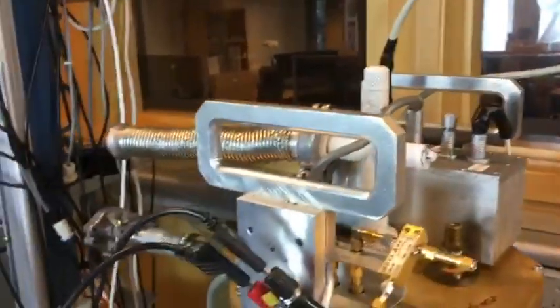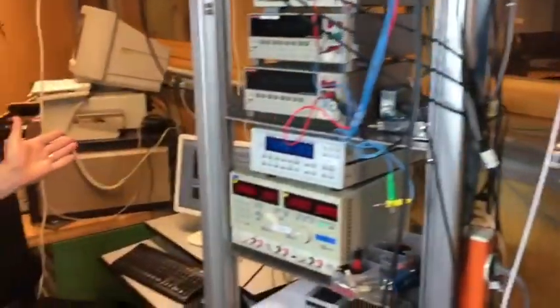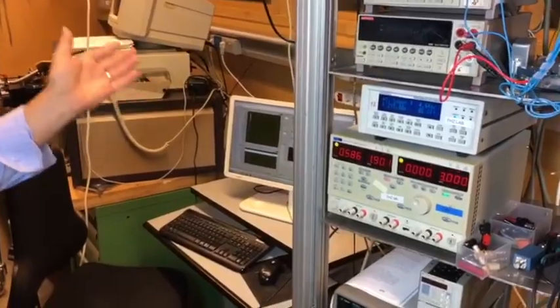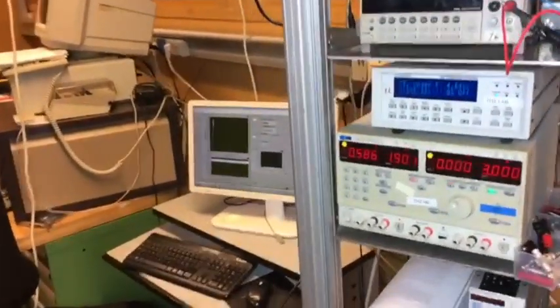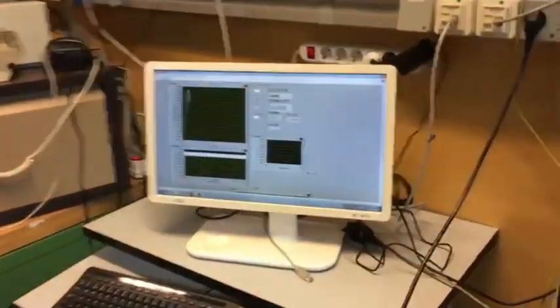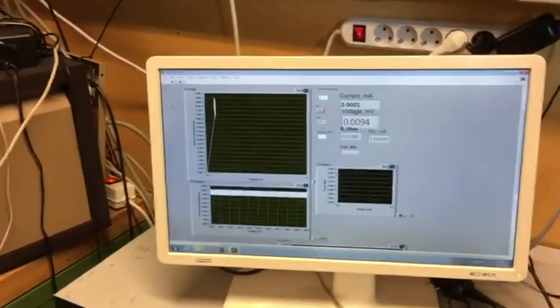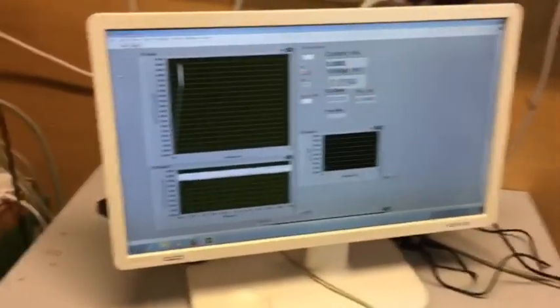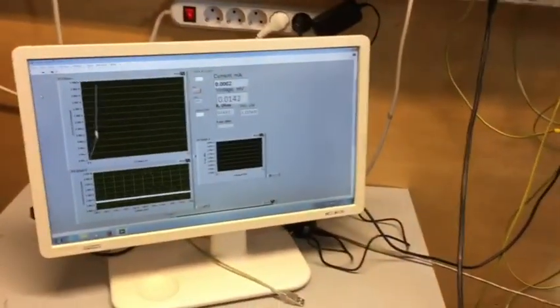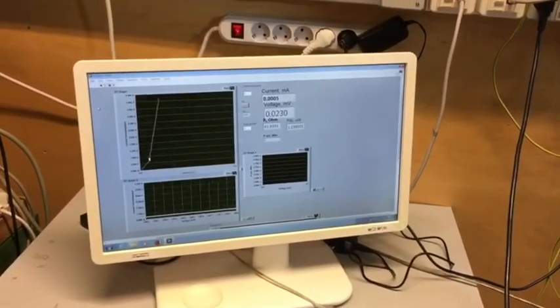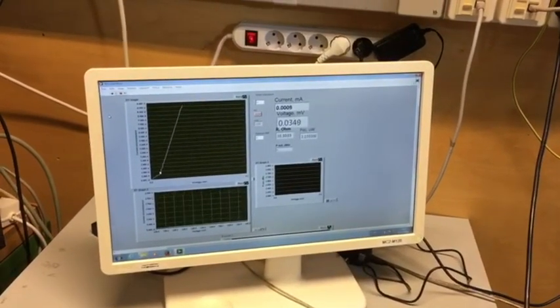The computer records the current and voltage and shows what we call an IV curve—a current-voltage curve—on the screen. When we apply some voltage, we observe that the curve moves.